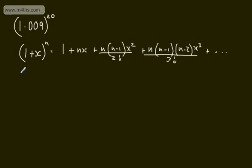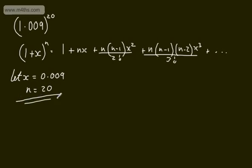For 1.009^20, we let x = 0.009 and n = 20, then substitute into the expansion. The level of accuracy increases the more terms we include. Including the x^4 term is more accurate than stopping at x^3. The linear approximation is least accurate, then the quadratic, then the cubic — each improving on the previous.